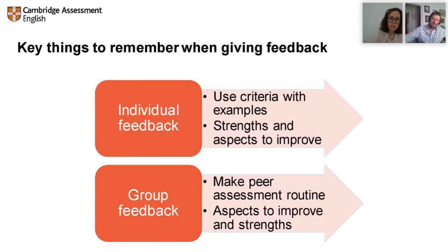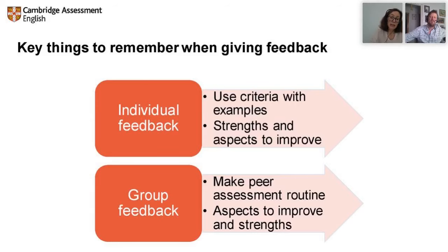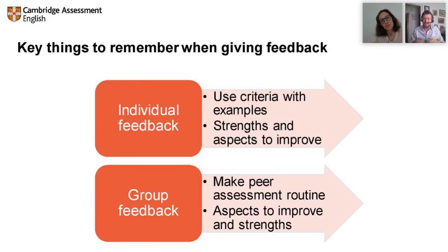When giving individual feedback, use the criteria with examples. Using criteria helps us be more objective and easier to assess when we have something specific to refer to. We should look at strengths and aspects to improve, keeping comments motivating and encouraging. For group feedback, try to make peer assessment a routine and allow time for it during class. Concentrate on aspects to improve anonymously — students shouldn't be able to identify with what you're saying. It should be in general.